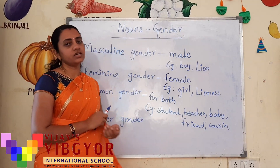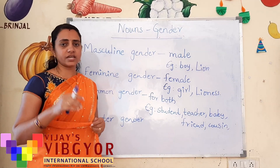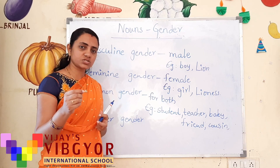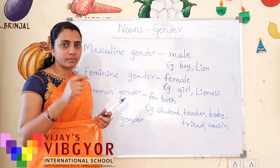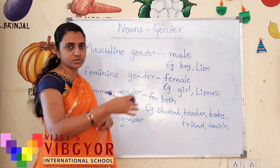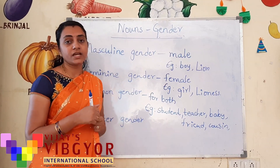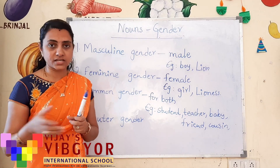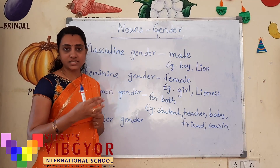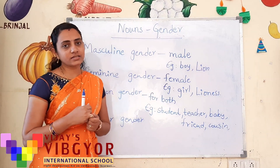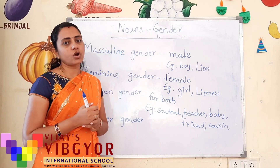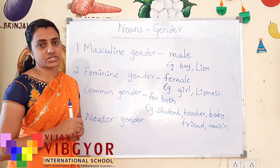For example, take the word 'student' — he may be either a boy or she may be a girl. So whether a boy student or a girl student, the word 'student' is common. Next, 'teacher' — male or female, you can use the word teacher for either. 'Baby' — it may be a baby boy or baby girl. Similarly, friend, cousin, neighbor — whether they are male or female, these are common gender words.